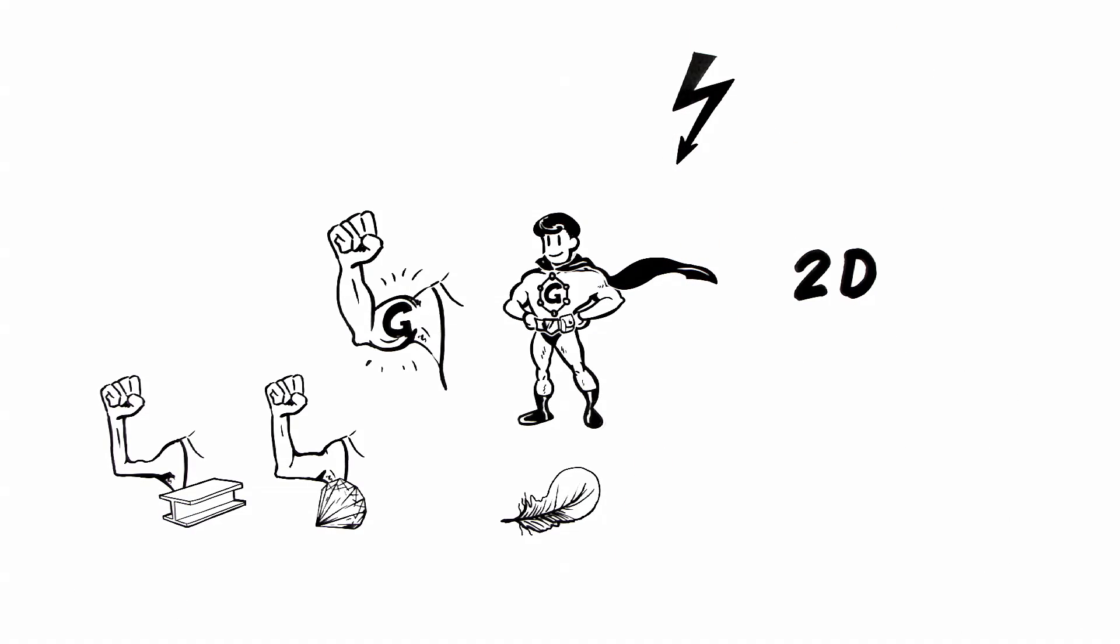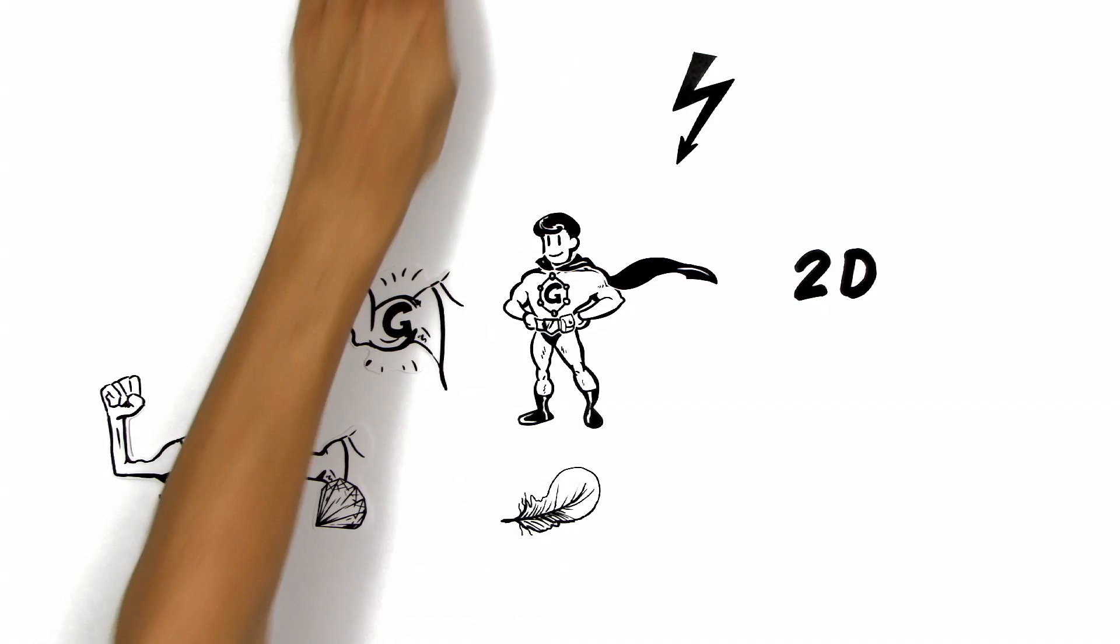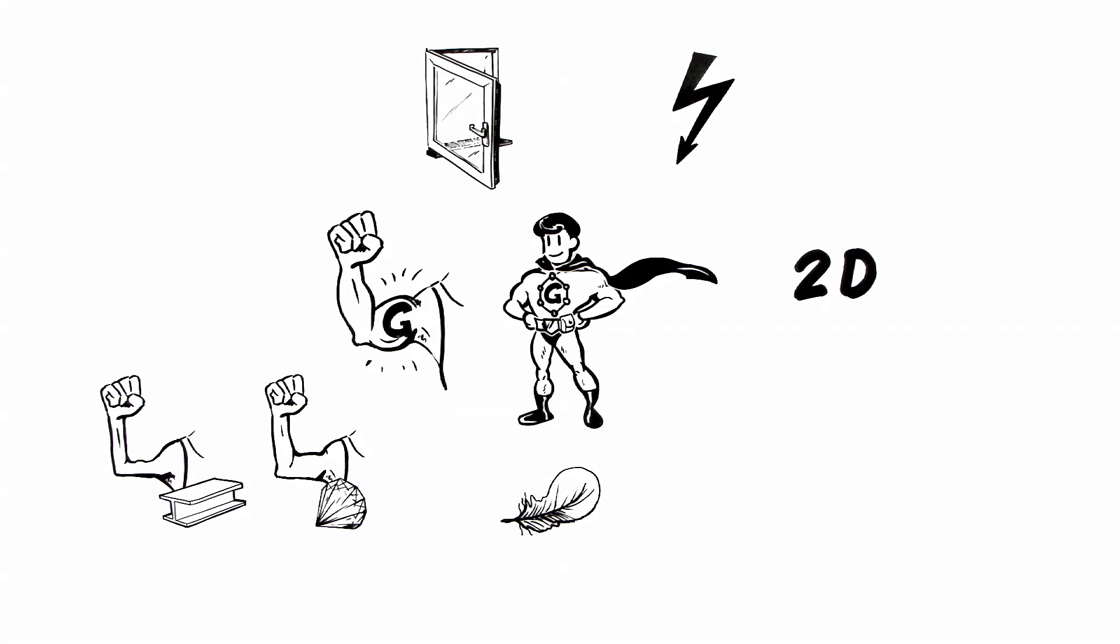G conducts electricity much better than copper. G is a transparent material. G is bendable and can take any form you want.